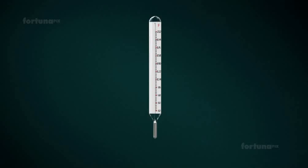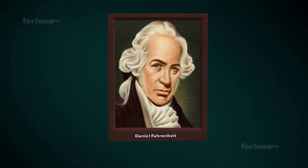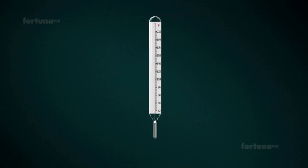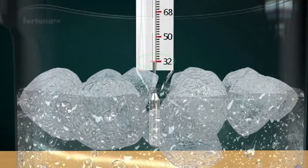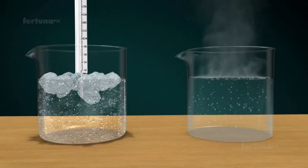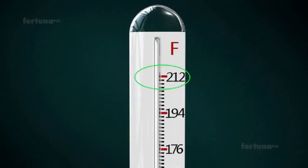The other temperature scale on a traditional thermometer is the Fahrenheit scale named after the German physicist Daniel Fahrenheit. On the Fahrenheit temperature scale the freezing point of water is set as 32 degrees and the boiling point of water is 212 degrees.